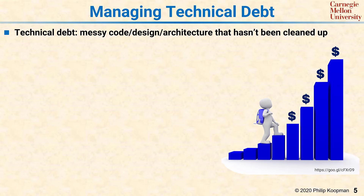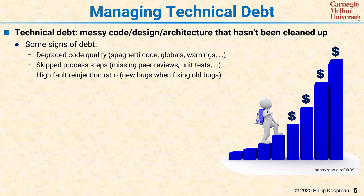Technical debt is an interesting way of thinking about what happens when you take shortcuts in your design process. Technical debt is messy code, messy designs, messy architecture, or missing things that you just haven't had time to clean up. Some signs of debt include degraded code quality such as spaghetti code, too many globals, or a bunch of unresolved compiler warnings. Or maybe some skipped process steps — such as not doing peer reviews or skipping unit tests. Maybe you're seeing a high fault re-injection ratio, where every time you fix something, new bugs appear at a high rate. All those types of things tell you that you're incurring or have already incurred technical debt.